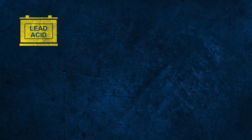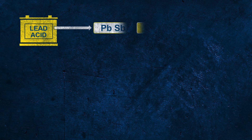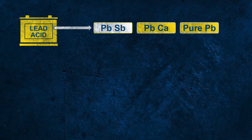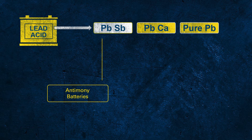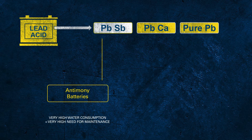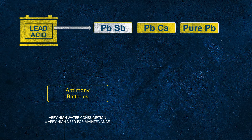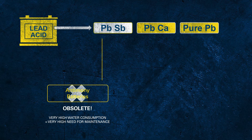When talking about lead, we're actually talking about the lead alloy used to produce the grids. There are different alloys potentially used for batteries. PBSB indicates so-called antimony (SB) batteries. Antimony batteries have very high water consumption, which is why they demand very high maintenance to regularly check the electrolyte level and refill with distilled water. This is why this battery technology is obsolete today.